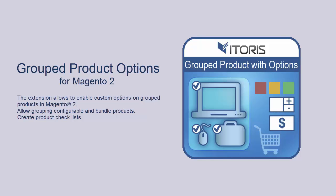Dear viewers, our team is glad to show you a tutorial for our extension Name Group Product Options for Magento 2. The extension allows you to create group products where associated products have custom options.